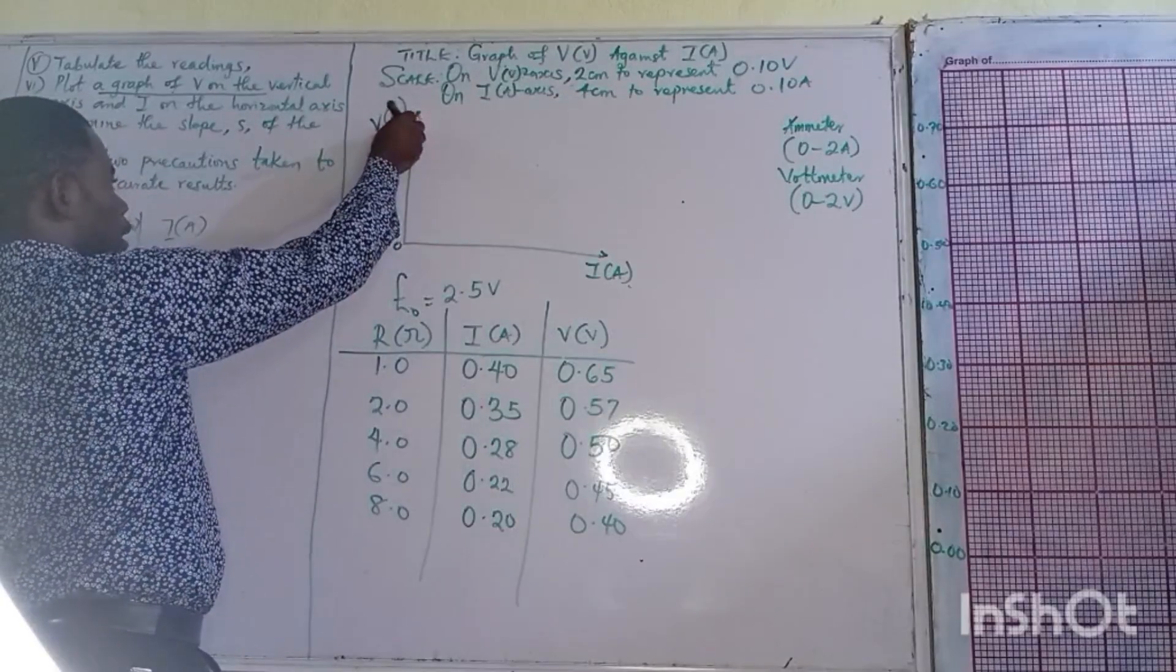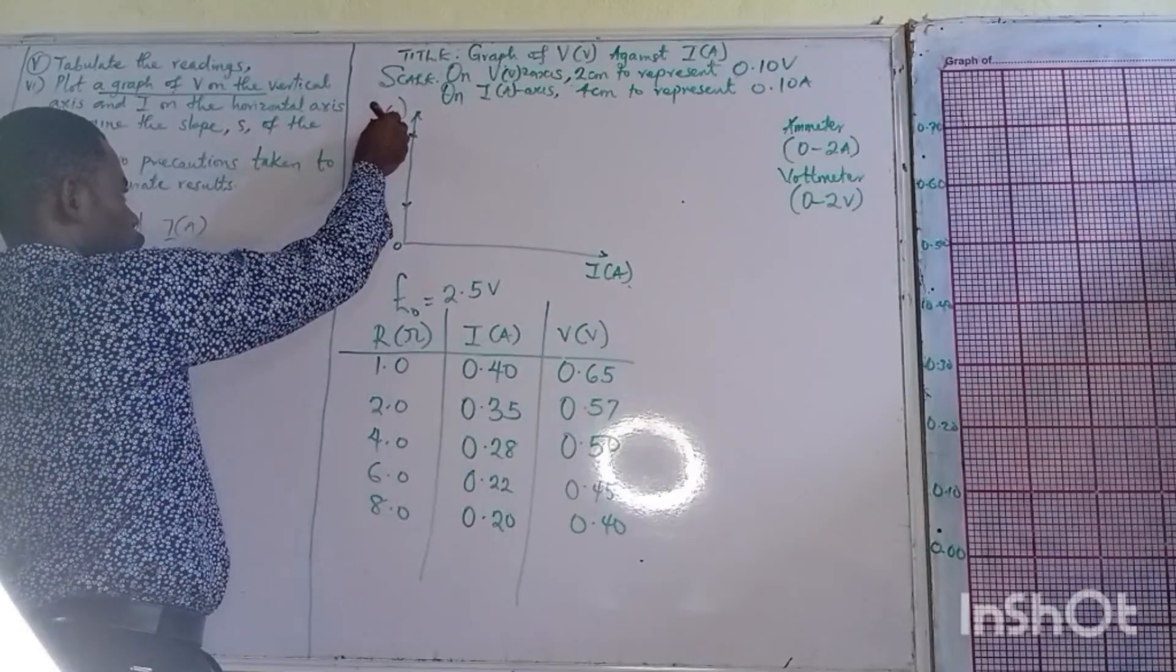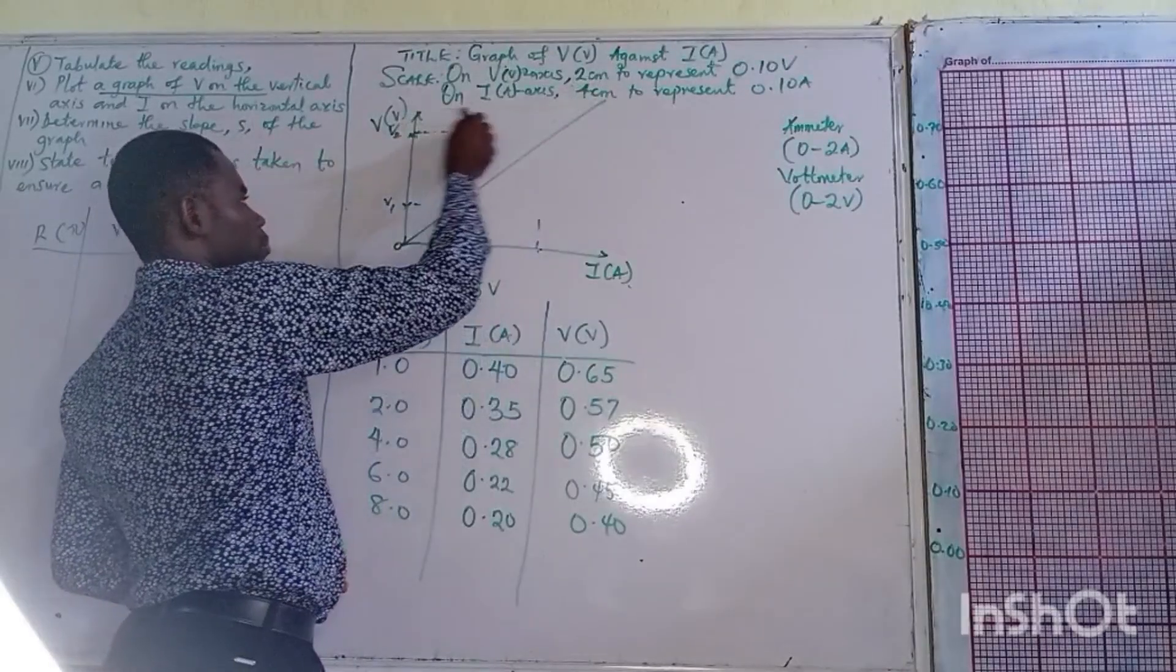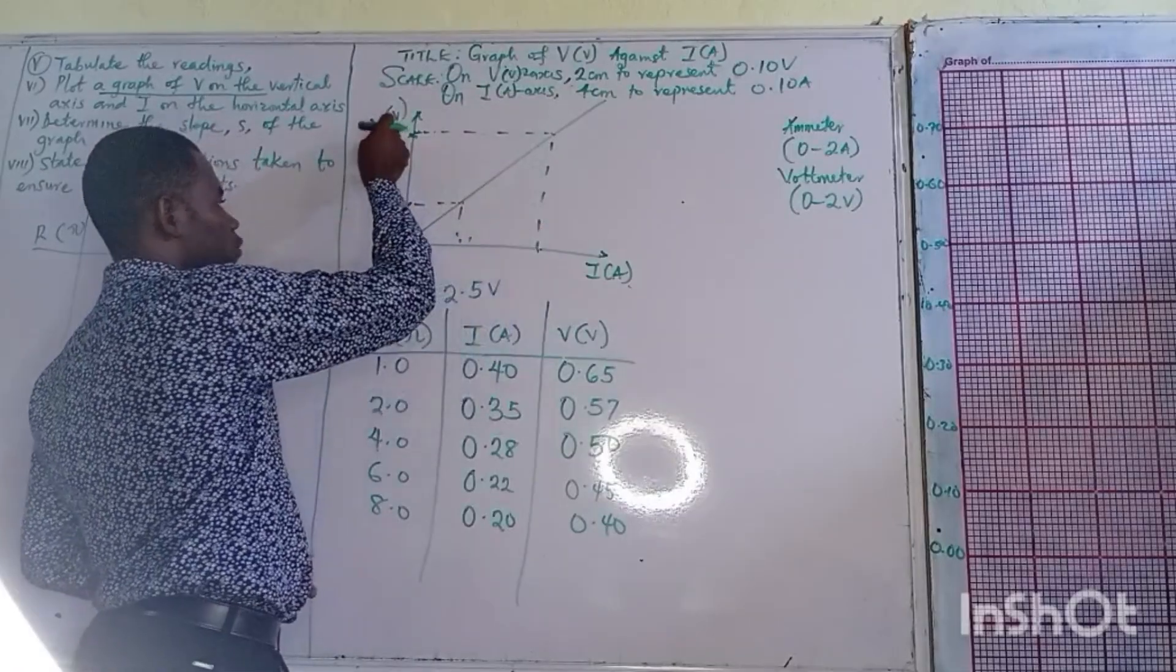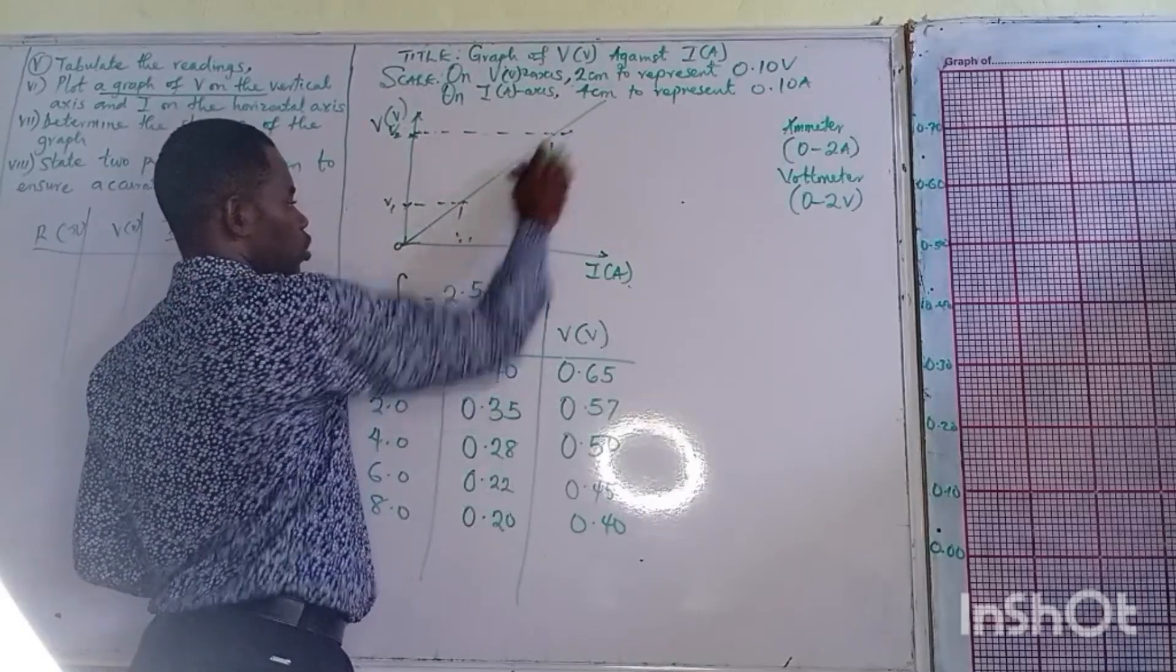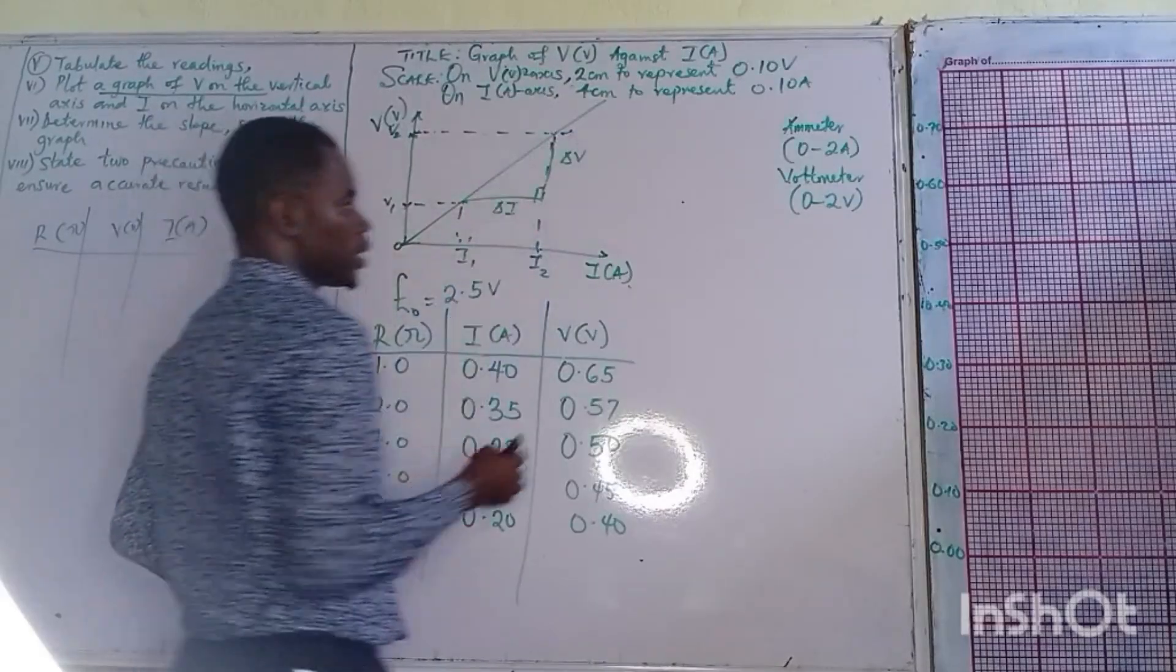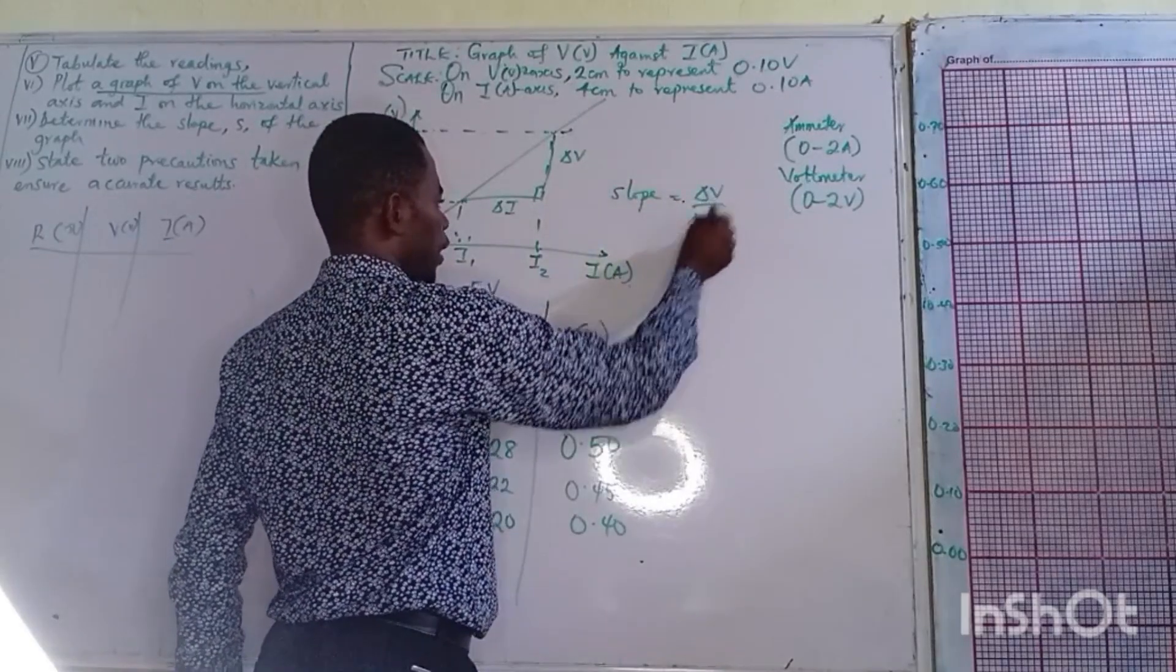My highest value of V is at the top, my lowest value is here. This is V2, V1, my highest value of current at this point, and this is I2, this is I1. I have my slope already saying that change in V over change in I. My slope equals change in V over change in I.